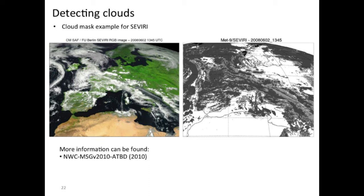An example multi-spectral threshold technique is implemented in the NowCasting SAF software, documented in a 2010 algorithm theoretical baseline document. It produces three categories: clear sky, cloud contaminated (light gray), and cloud filled (dark gray). The uncertainty is reflected in the cloud-contaminated category, and the result corresponds well to what you see in the RGB image.